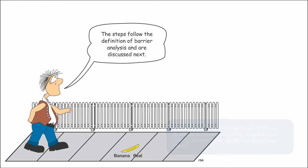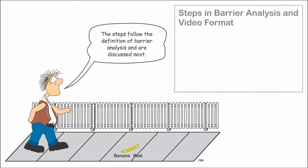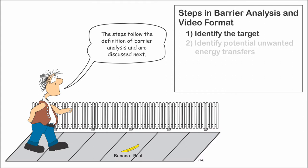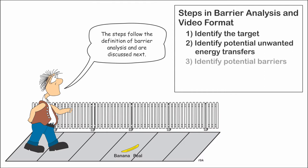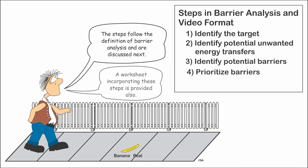The steps in the barrier analysis process follow the components of the accident process. First, identify either the target or the potential unwanted energy transfers. Then, identify potential barriers. And last, prioritize the barriers.